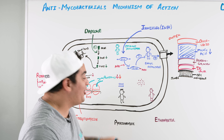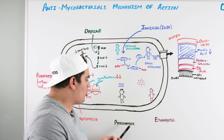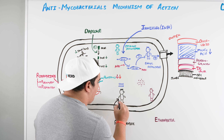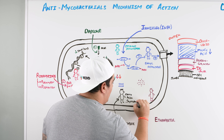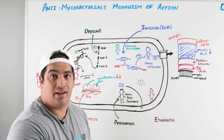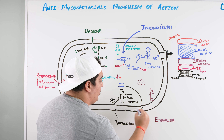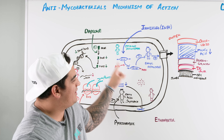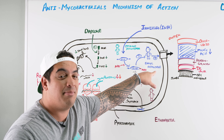Pyrazinamide also works to inhibit mycolic acid formation. It's still somewhat questionable exactly how, but the most recent literature says it inhibits an enzyme called fatty acid synthase. Mycolic acid is like a fatty acid, so if you inhibit fatty acid synthase with pyrazinamide, you can't make the mycolic acid molecules integral to the cell wall. So two drugs inhibit mycolic acid: isoniazid through the enol reductase pathway, and pyrazinamide through fatty acid synthase inhibition.